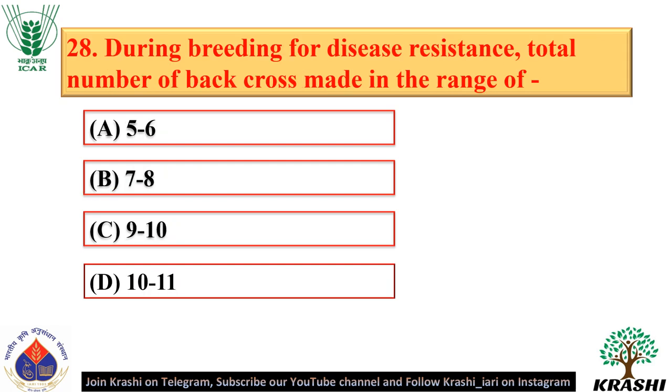Question number 28. During breeding for disease resistance, the total number of backcrosses made is in the range of 5 to 6 — option A.